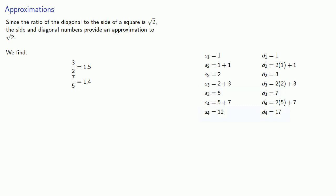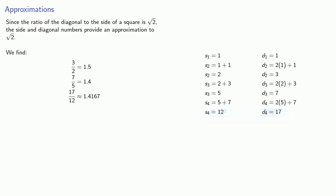We can continue to produce side and diagonal numbers as far as we want, getting better and better approximations to √2.